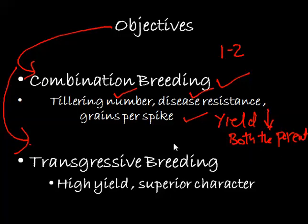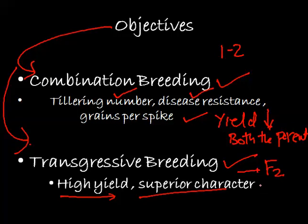On the other hand, the second type — transgressive breeding — aims to create a superior character or superior yield by crossing two different parents. Transgressive segregation produces plants in the F2 generation that are much more superior than their parent generations, superior to one or both parents in combination.